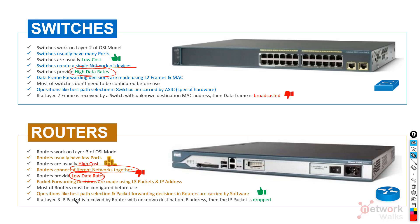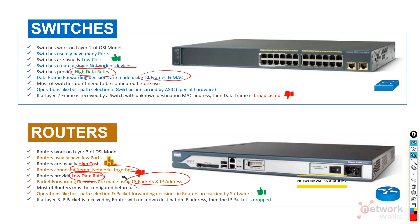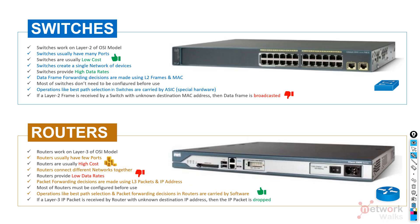Switches provide high data rates while routers provide lower data rates, because routers have to perform many sophisticated jobs. Frame forwarding decisions in switches are made using Layer 2 frames and MAC addresses, while in routers these decisions are made through Layer 3 IP packets, Layer 3 headers, and IP addresses.